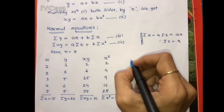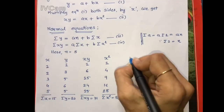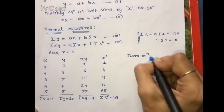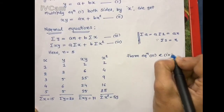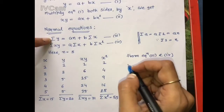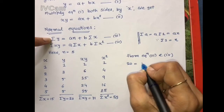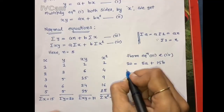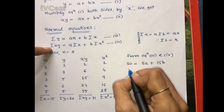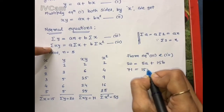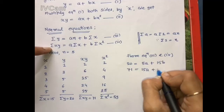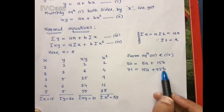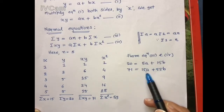Therefore, putting the values into equations 3 and 4: from equation 3, Σy = 20 = 5a + 15b. From equation 4, Σxy = 71 = 15a + 55b. To find the values of a and b, we can eliminate either a or b.